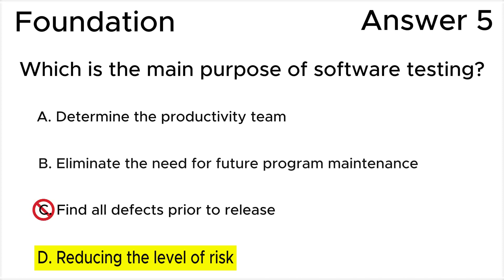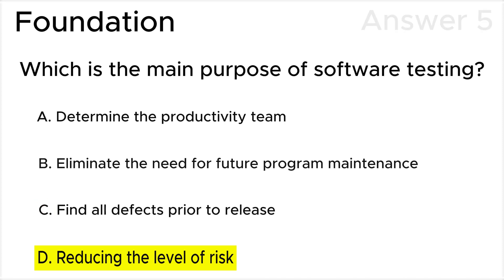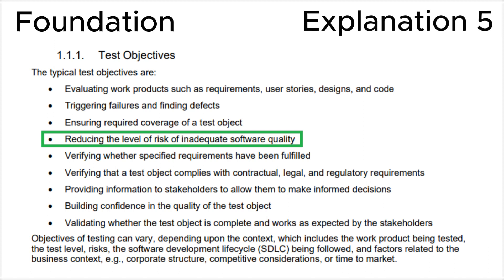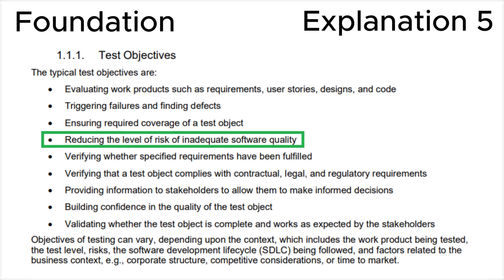Answer C — find all defects prior to release — is practically impossible according to testing principle 7 in the ISTQB syllabus, which covers the 'absence of defects fallacy' explanation.